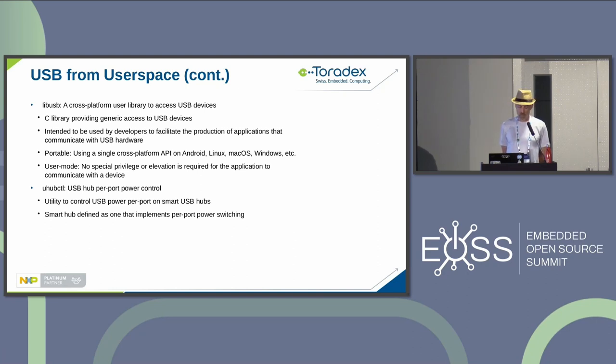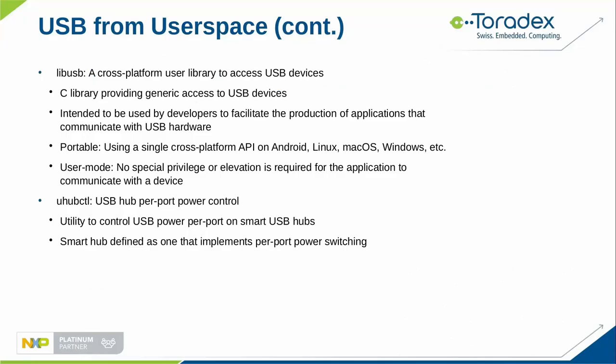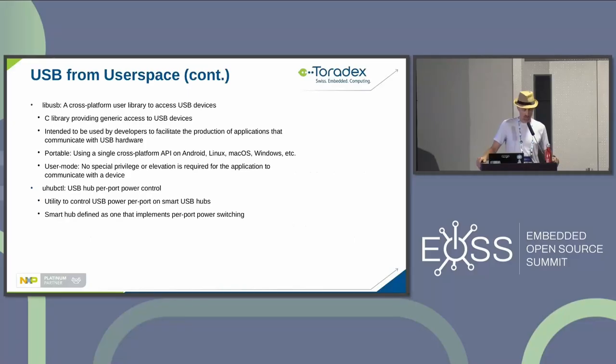Another interesting tool is uhubctl for USB hub per-port power control. It allows powering individual hub ports on and off separately — very useful in embedded devices. However, this requires a hub that actually implements the feature, as the USB spec cannot enforce it. Hubs on Toradex carrier boards are usually capable of this.